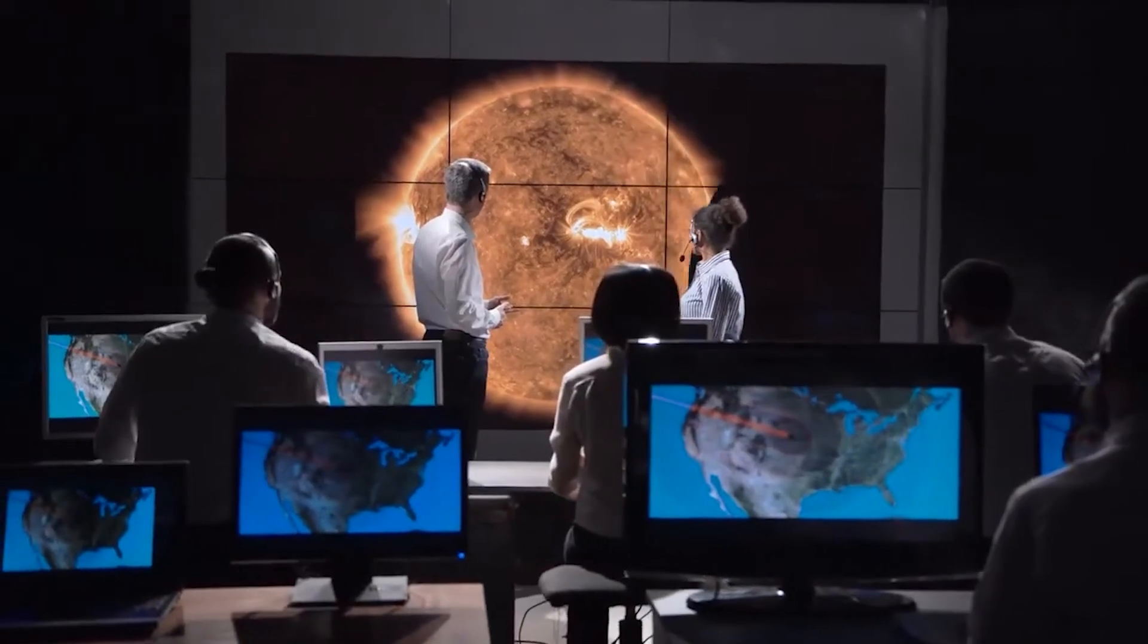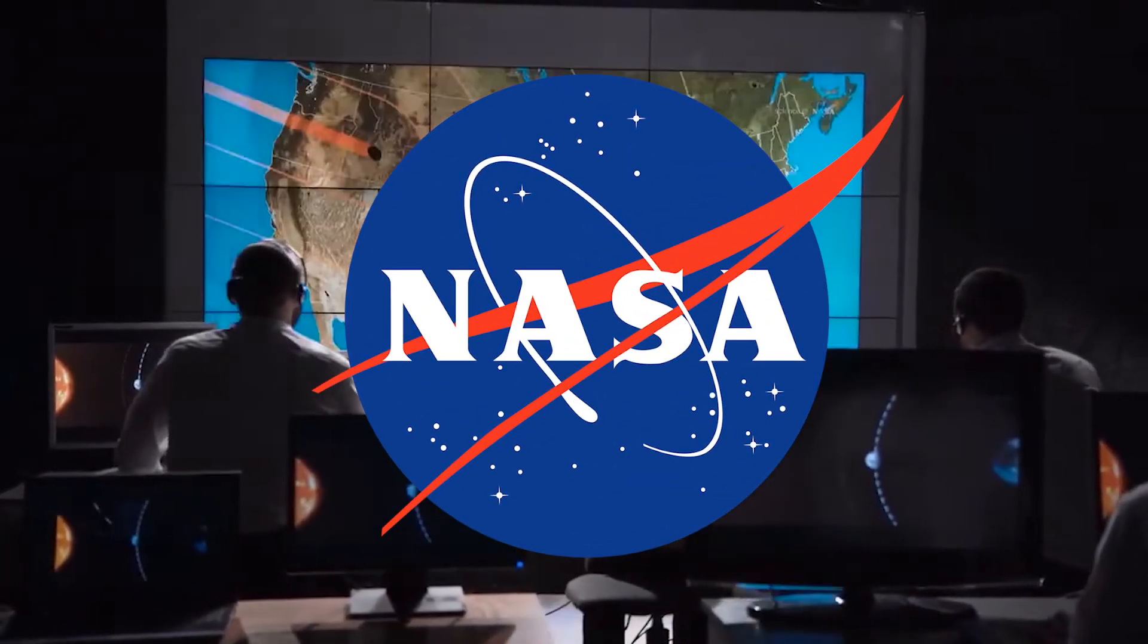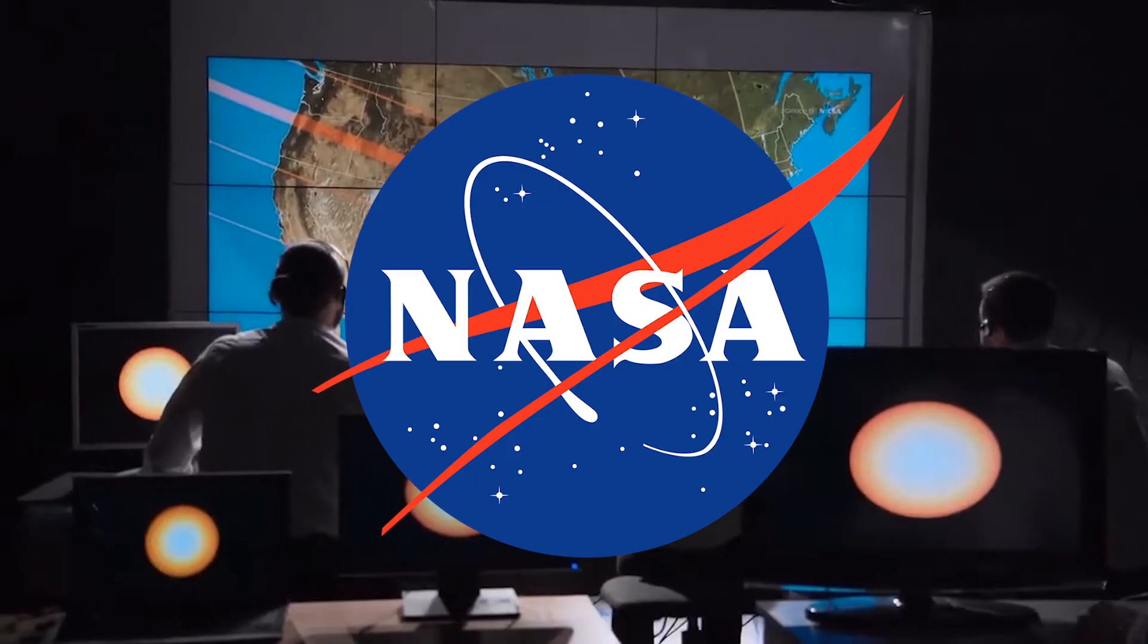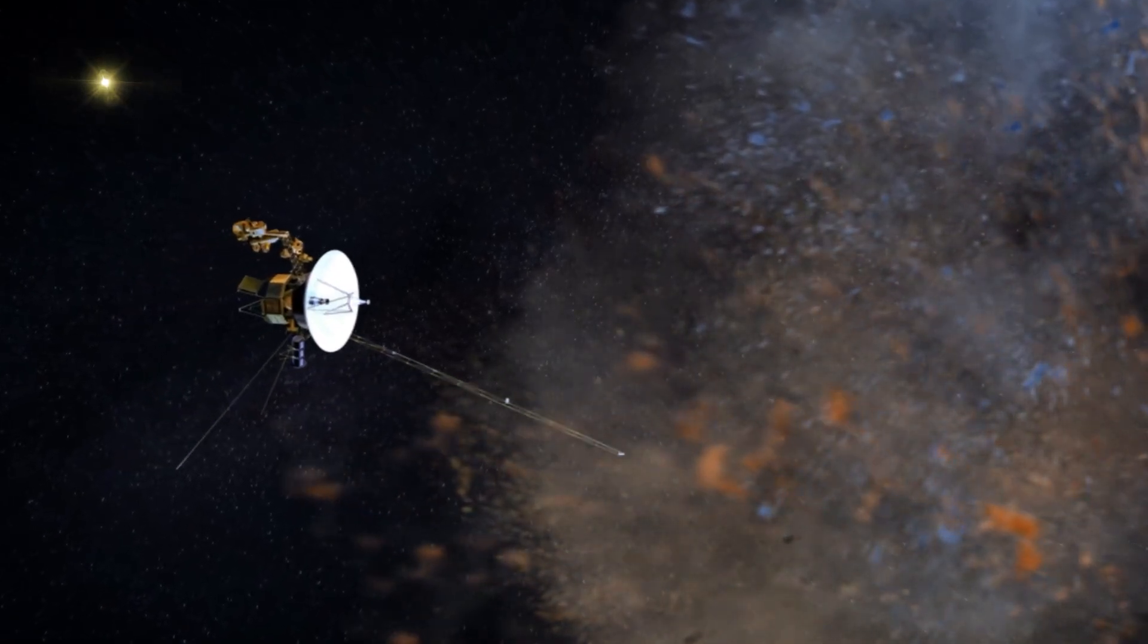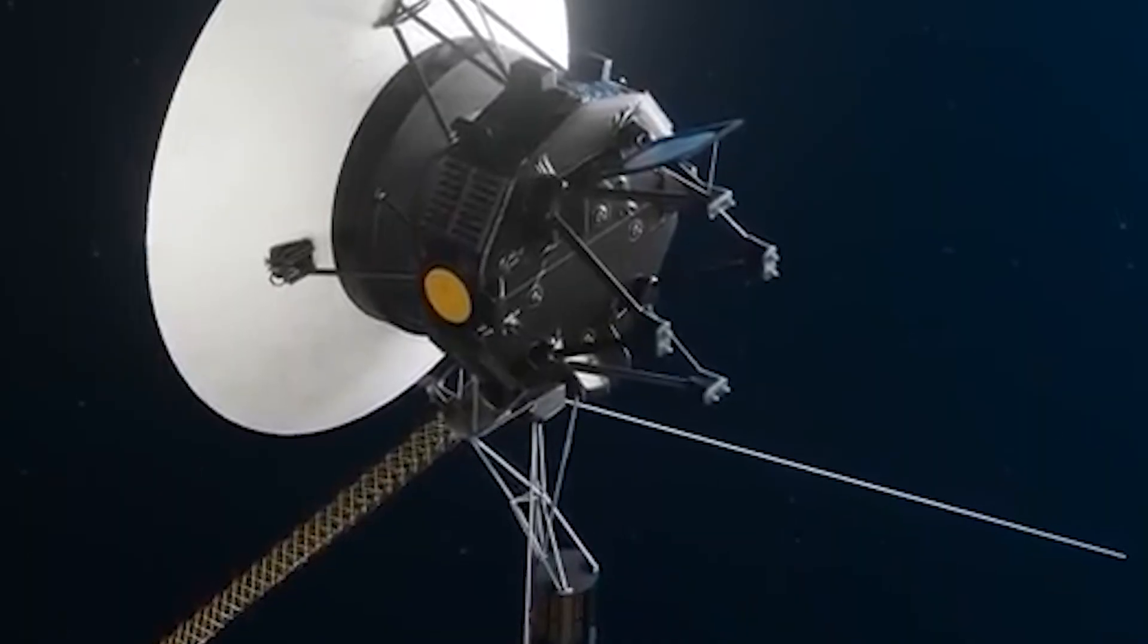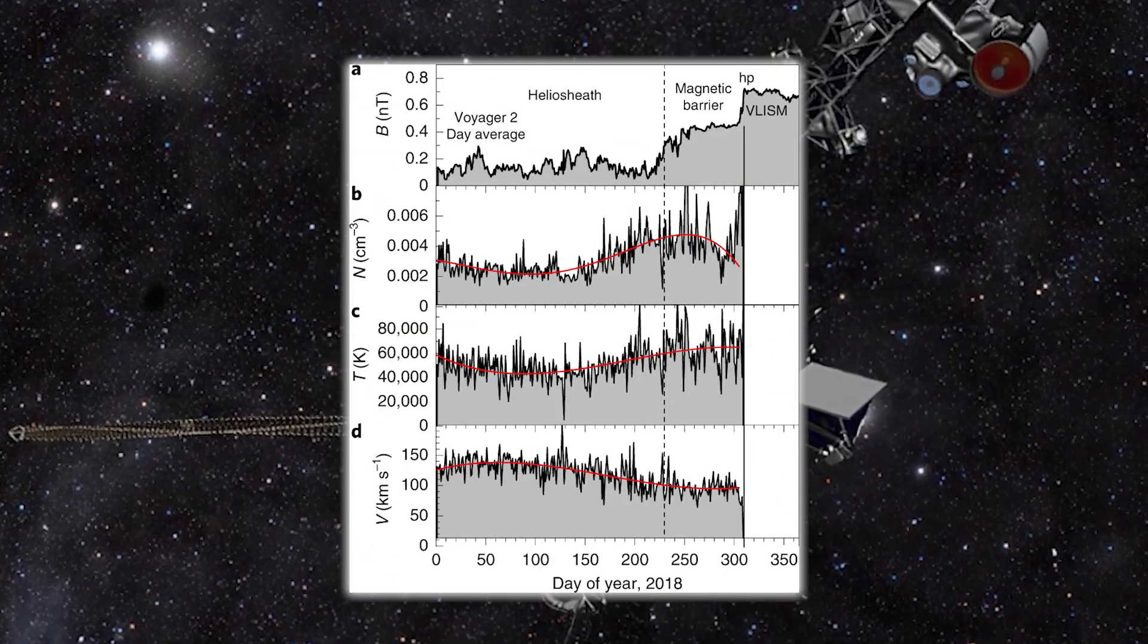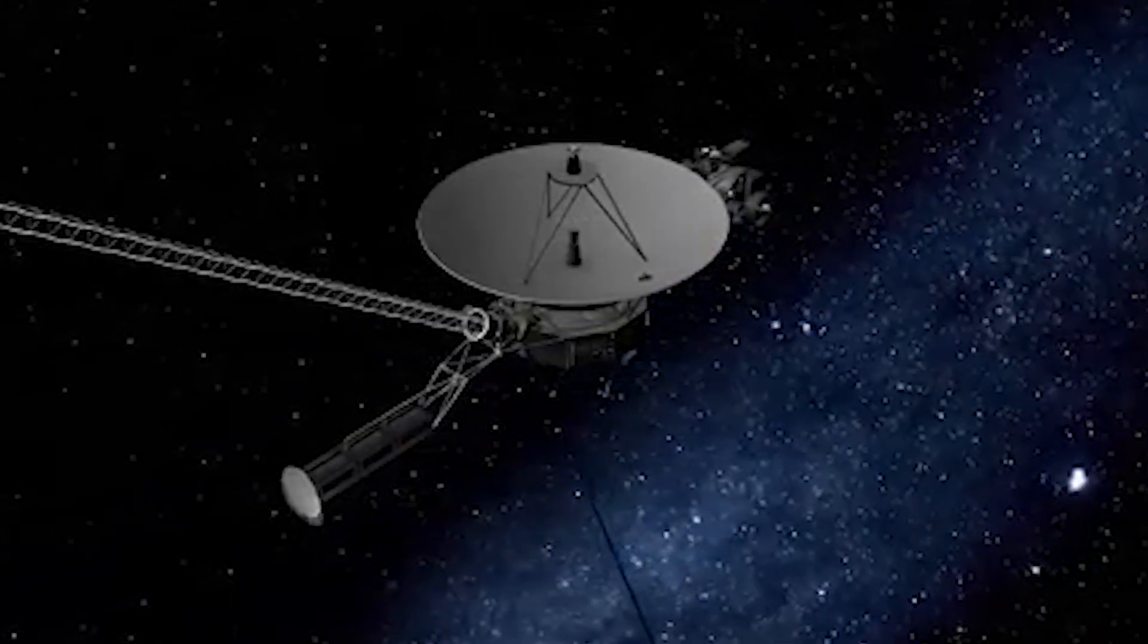But recently, something changed. Something deep inside Voyager 2's latest data burst caught the attention of engineers at NASA's deep space network. A pattern emerged, one that defied routine telemetry or predictable system behavior. When they finally decoded it, what they found wasn't a routine systems report or another scientific update. It was a message, and it was not looking good.